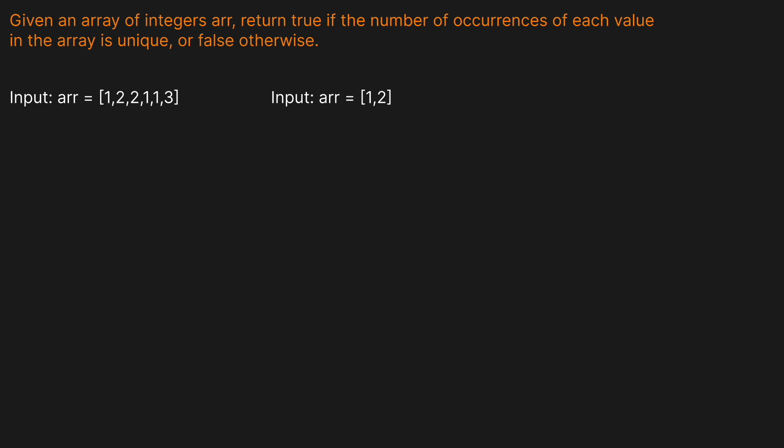Given an array of integers, return true if the number of occurrences of each value in the array is unique, or false otherwise.